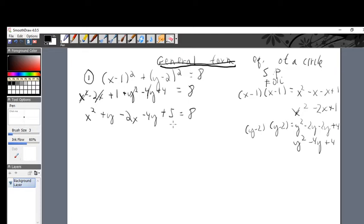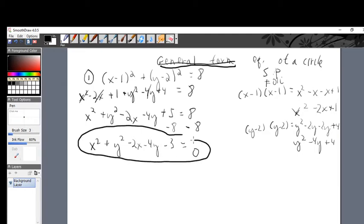For general form, I've got to get it to equal 0 on the right-hand side. So I do minus 8 on both sides to get this to become 0. I've got x² + y² - 2x - 4y. 5 and negative 8 is negative 3 equals 0. Finally, this is the general form of the equation.